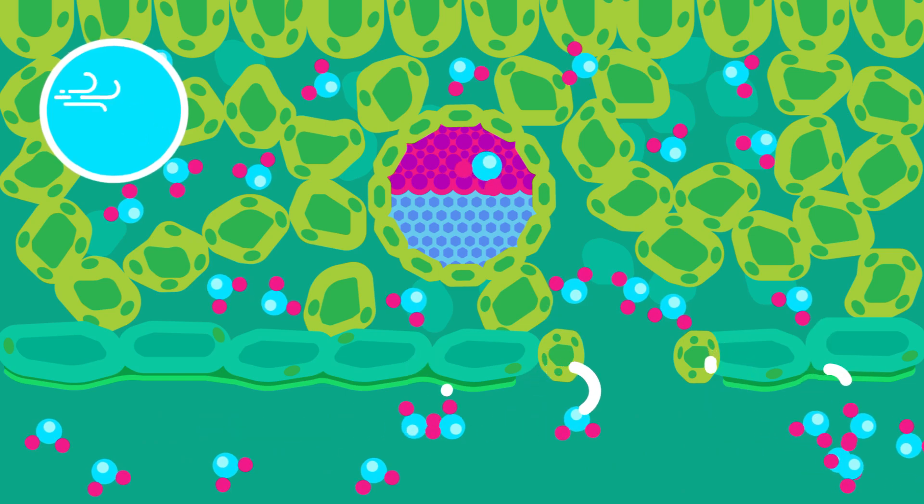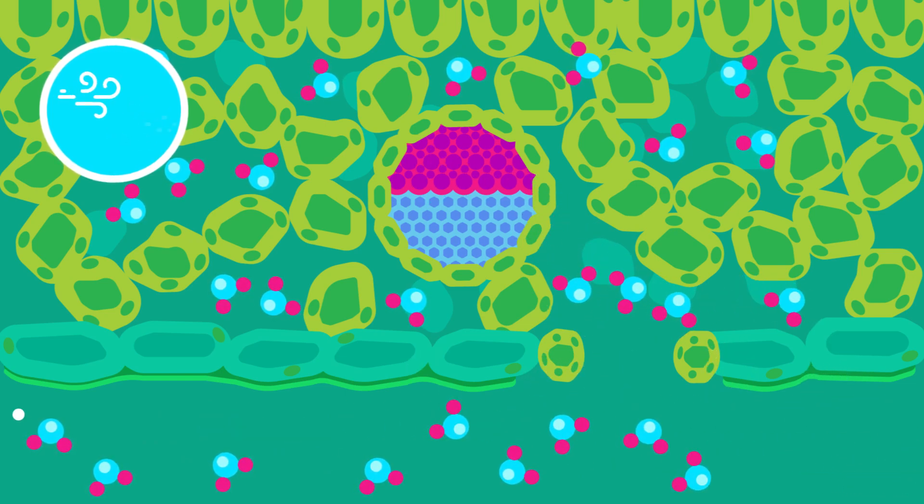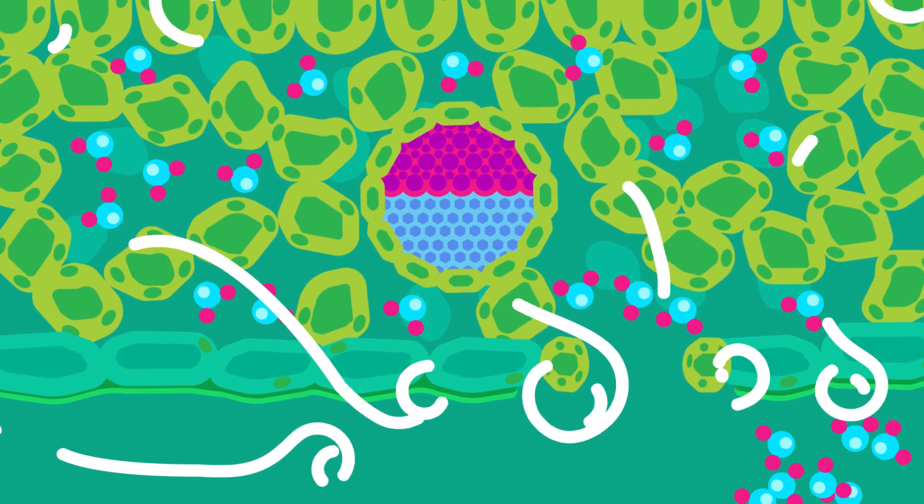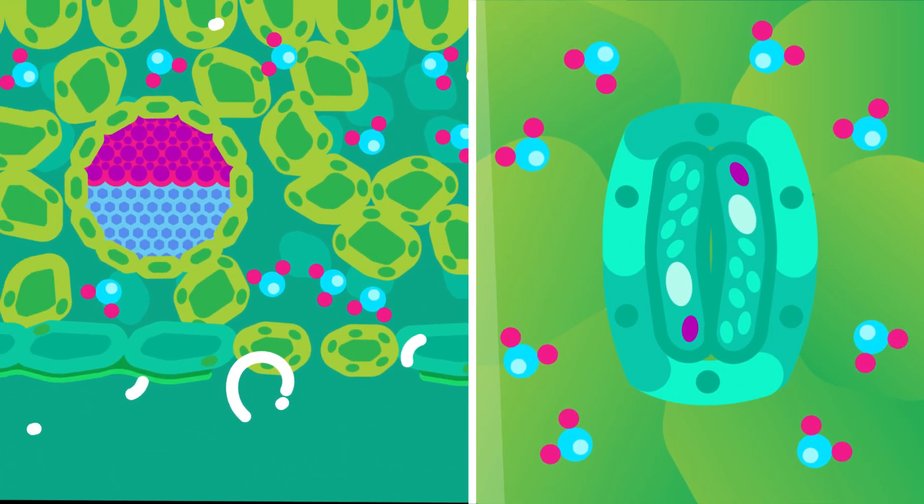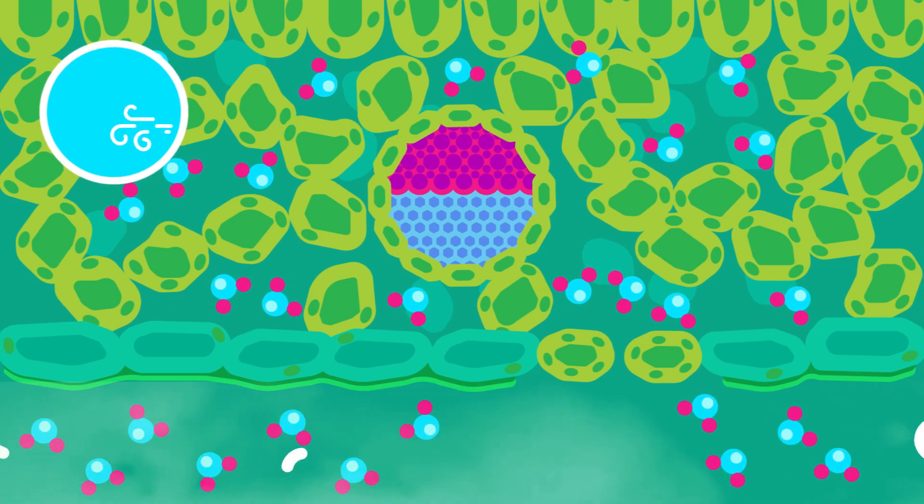The stronger the wind, the higher the rate of transpiration. However, if the wind is very strong, the stomata may close because the guard cells lose too much water. What would happen if there is a cool, wet wind?